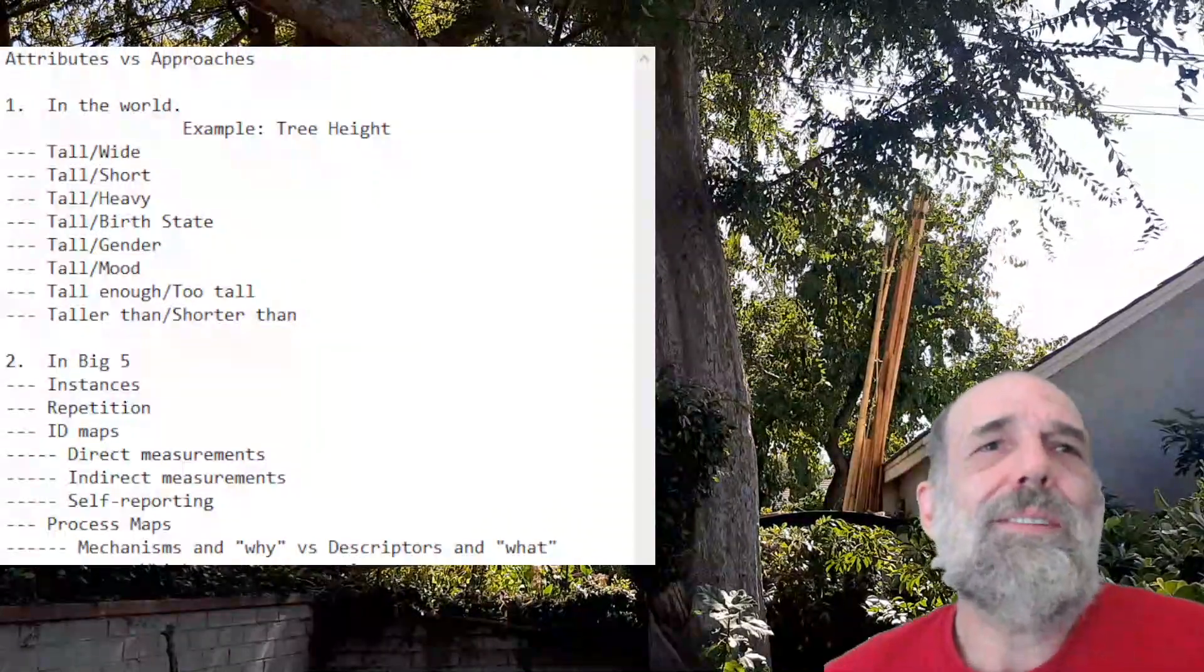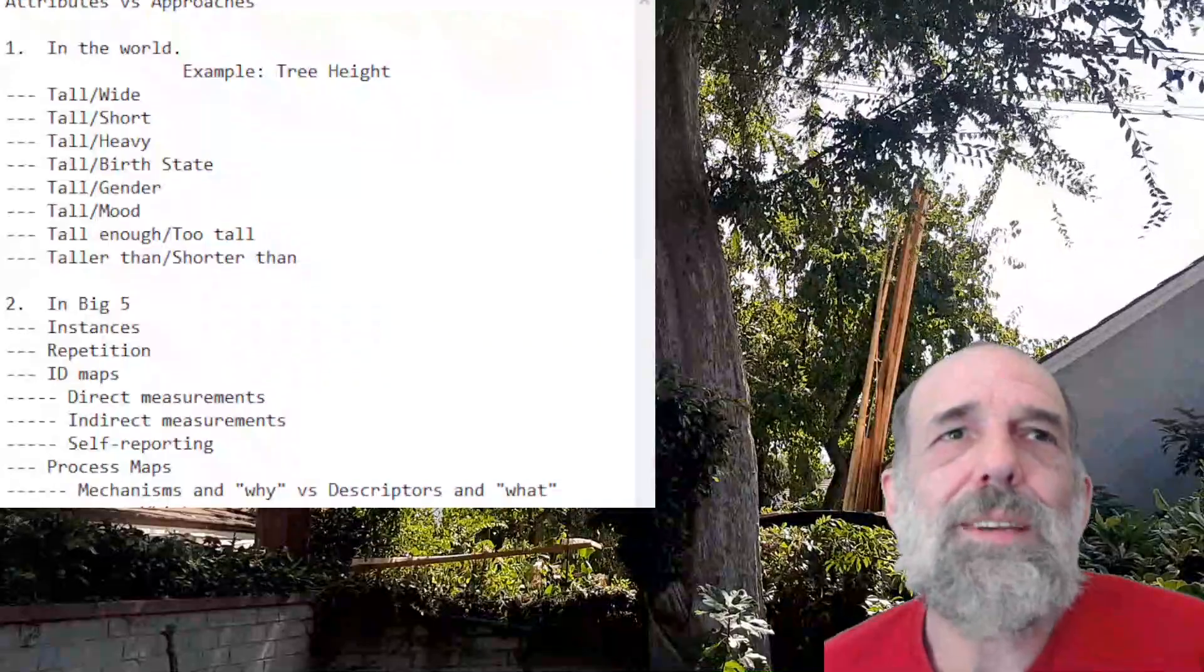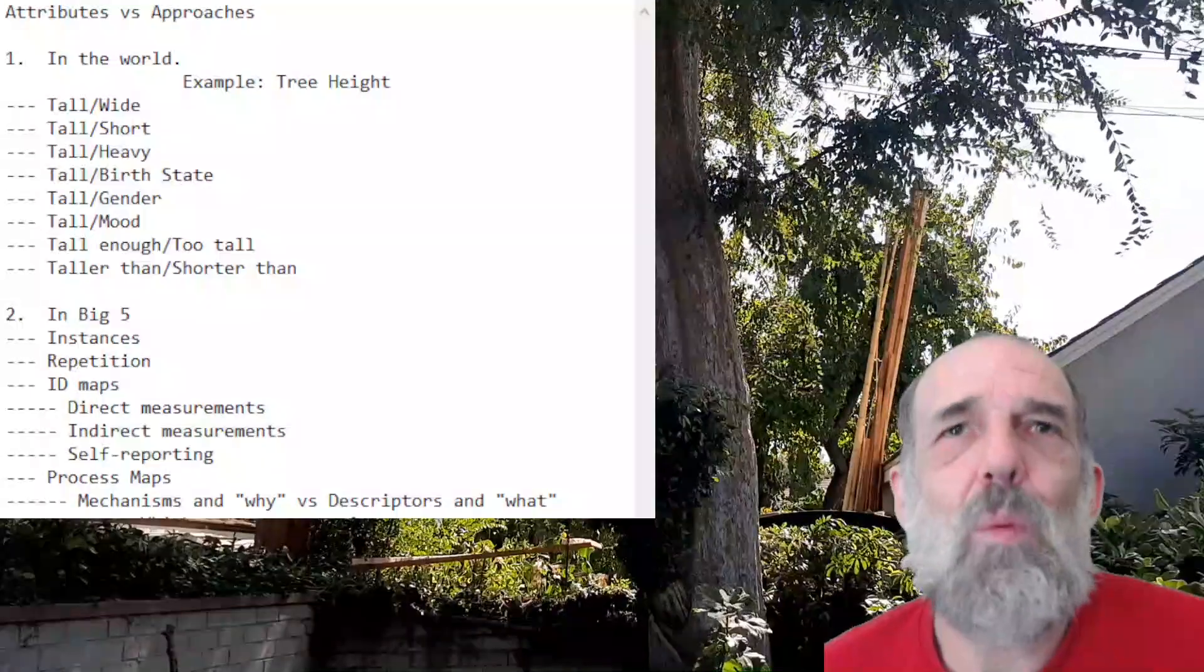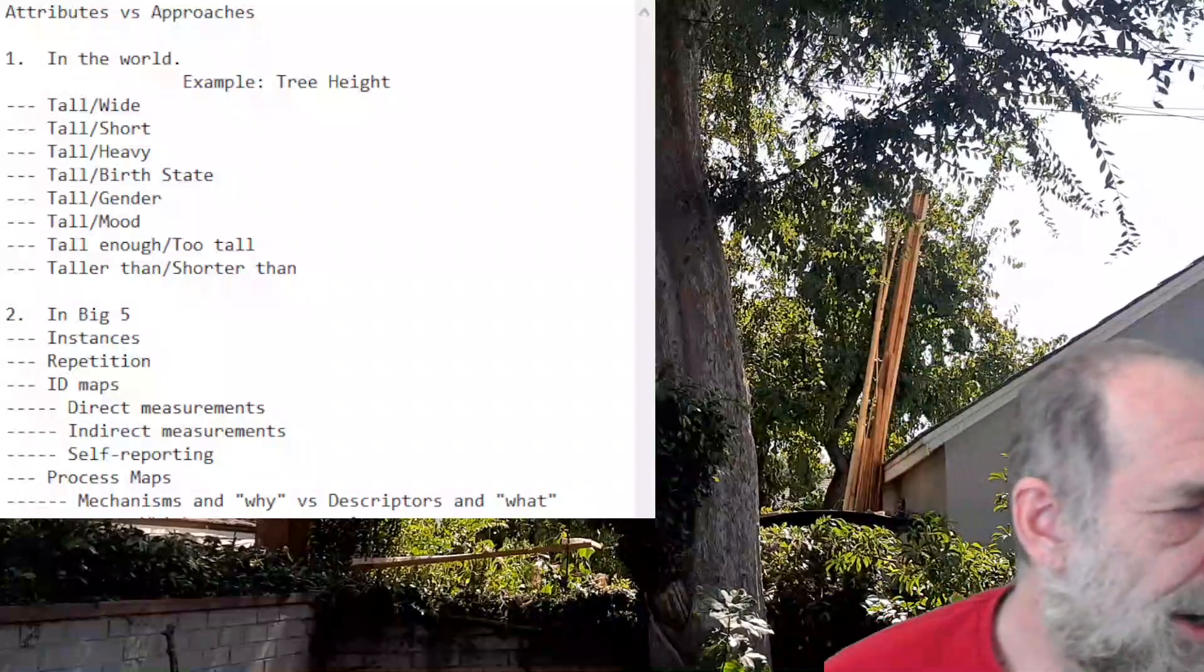So, in order to see why that's so much more determinate, we have to understand the difference between mechanisms versus descriptors. So, Big Five doesn't purport to provide any mechanisms. It doesn't explain why somebody is conscientious, why somebody is agreeable, why somebody is neurotic or whatnot.